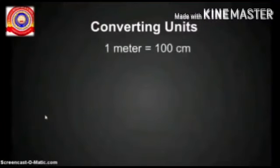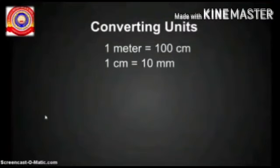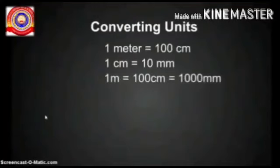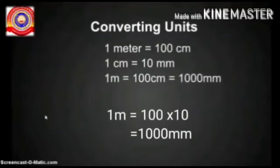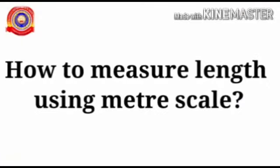Now we are going to study how to convert units and how to measure length using a meter scale. We know one meter equals 100 centimeters and one centimeter equals 10 millimeters. Therefore, one meter equals 100 multiplied by 10, which gives us 1000 millimeters. It is very important to know how to convert meters into centimeters and millimeters.